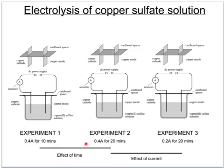The second experiment would use the same current, 0.4 amps, but would use a different time — here 20 minutes or 1200 seconds. Comparing the results of these two experiments would show us the effect of a change in time on the mass of copper deposited.